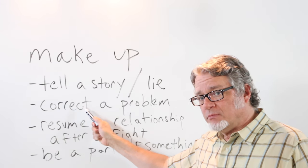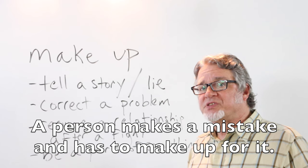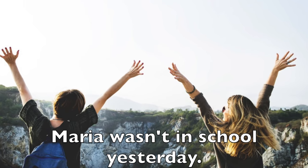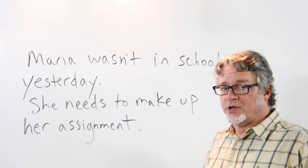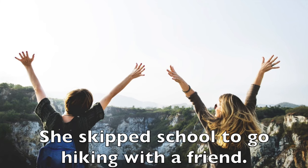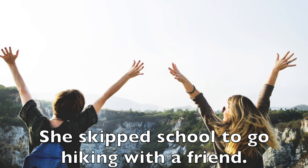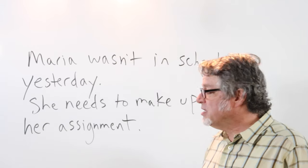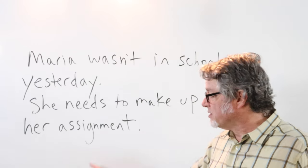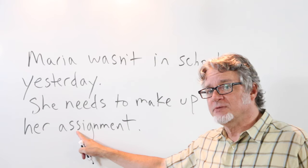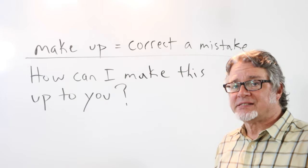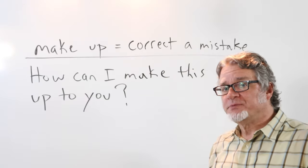When correcting a problem, a person makes a mistake and has to make up for it. That was the wrong thing to do. She needs to make up her assignment — this would be an assignment that she missed. When you make something up, you correct a mistake. How can I make this up to you?